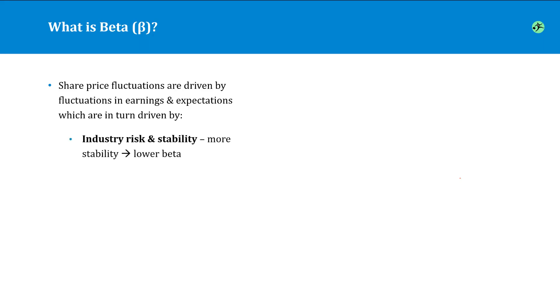So for example, if the industry risk is low and the industry performance is stable, then the company is going to tend to have less volatility in its earnings, and therefore it'll end up with a lower beta.